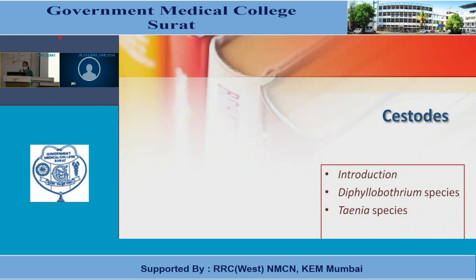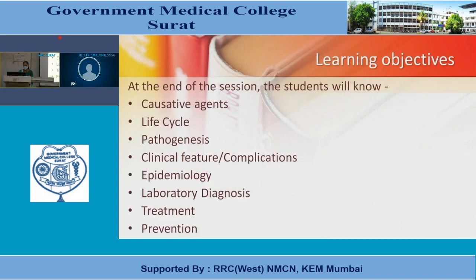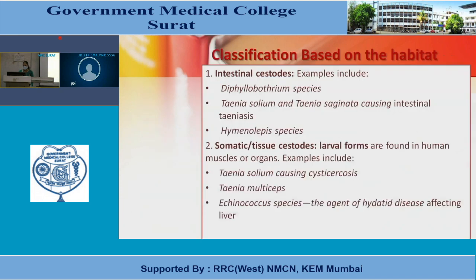Now we will see the introduction to cestodes, Diphyllobothrium species, and Tinea species. Learning objectives include causative agents, life cycles, pathogenesis, clinical features and complications, epidemiology, lab diagnosis, treatment, and prevention. Cestodes are classified by habitat into intestinal cestodes (e.g., Diphyllobothrium, Taenia solium, T. saginata, Hymenolepis) and tissue/somatic cestodes (larval forms found in human muscles or organs), such as T. solium causing cysticercosis and Echinococcus species causing hydatid disease affecting the liver.